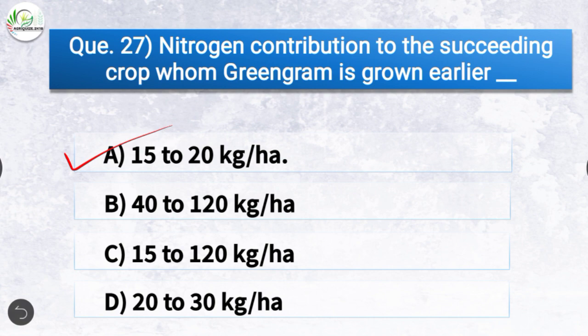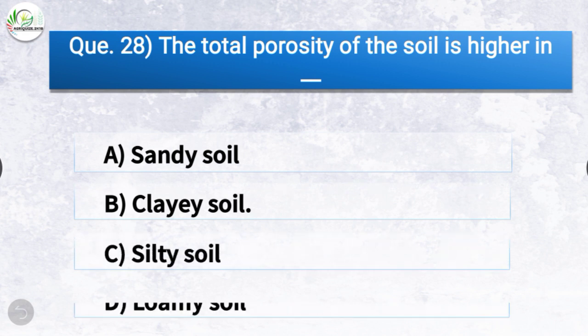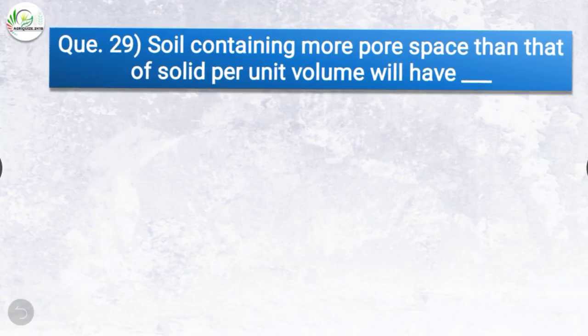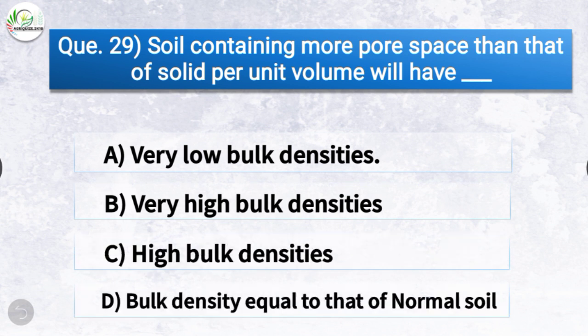Question number twenty-eight: the total porosity of the soil is higher in? The correct answer is option B, clay soil. Question number twenty-nine: soil containing more pore space than that of the soil solid per unit volume will have? The correct answer is option A, very low bulk densities.